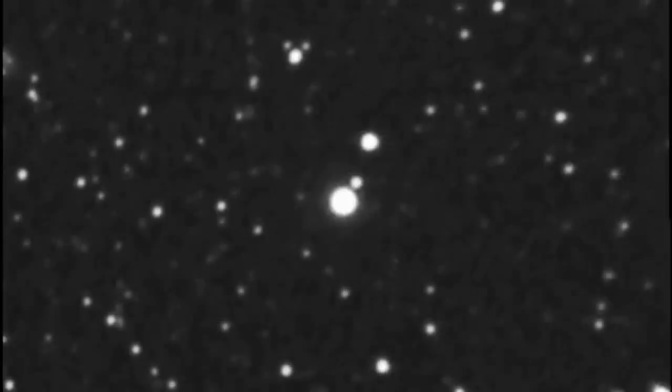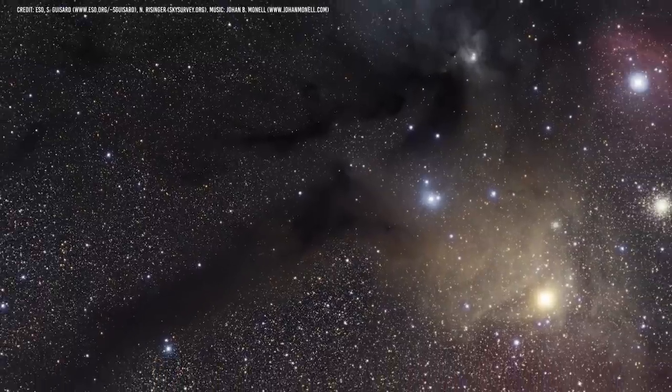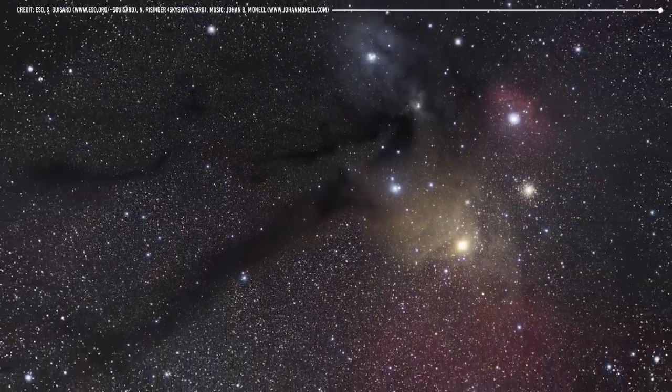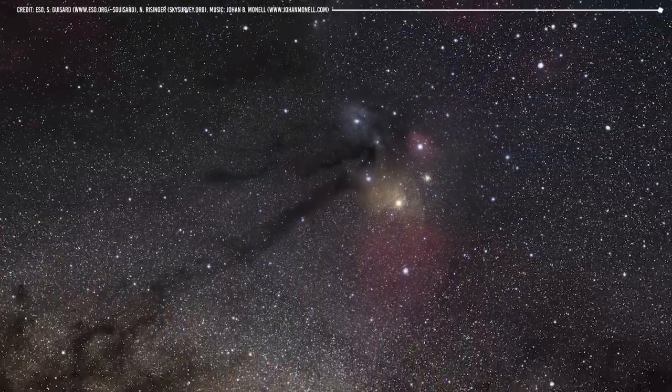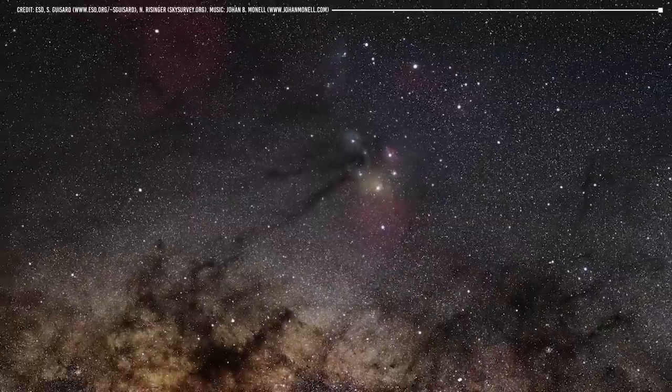The star is also known for its high proper motion, which means it moves quickly across the sky relative to other stars. Barnard's star has been extensively studied by astronomers, and its properties have been used to make important discoveries about red dwarf stars.